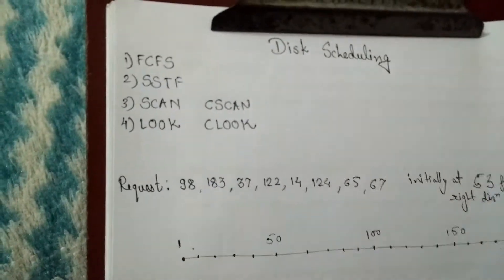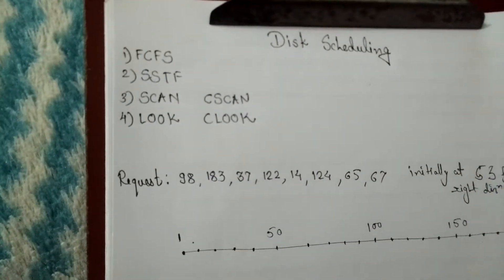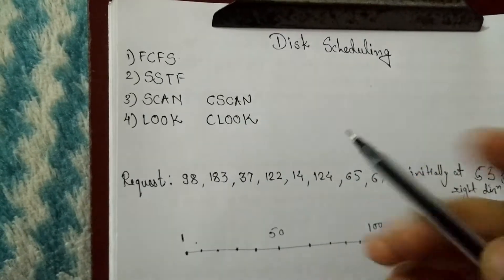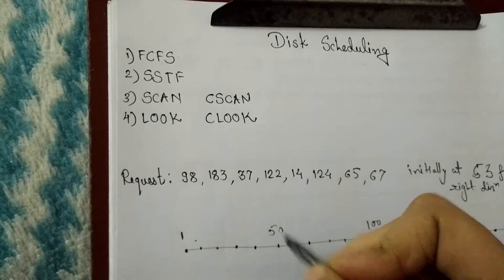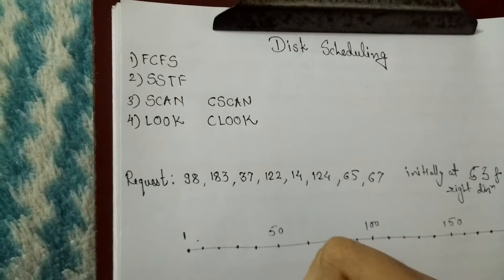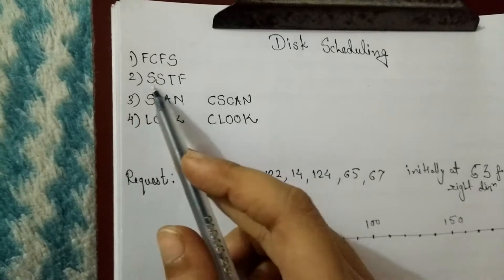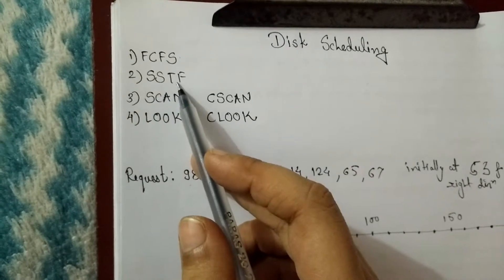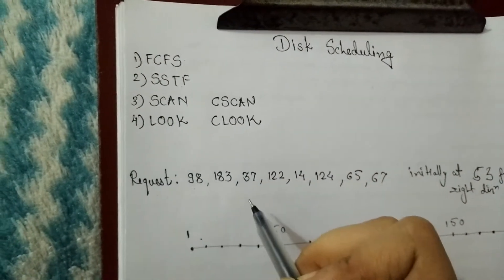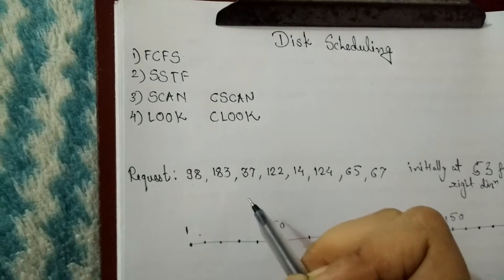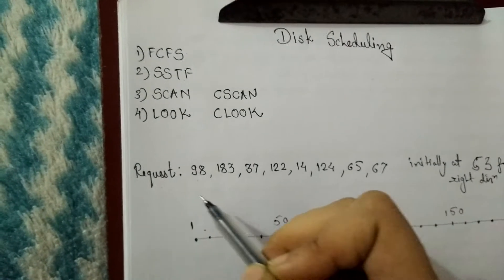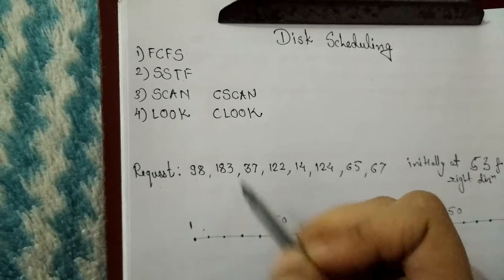The first algorithm is First-Come-First-Serve. This algorithm says that whichever request comes first will be solved first. The Shortest Seek Time First algorithm says that wherever your head is, whichever cylinder is at the shortest distance from it will be solved first.